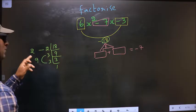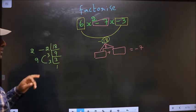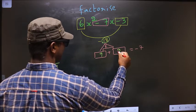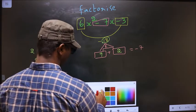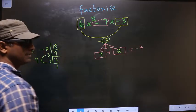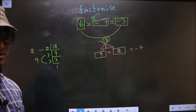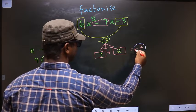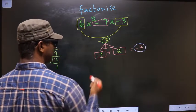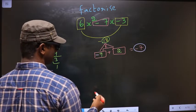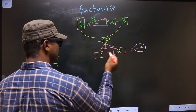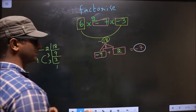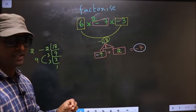Now 9 into 2 is 18, 9 minus 2 is 7. So now here I write 9 and here I write 2. Now we should adjust the signs. What I mean is here we should get minus 7. To get minus 7, I should put negative before 9 such that minus 9 plus 2 is minus 7, minus 9 into 2 is minus 18. So now the signs are adjusted.